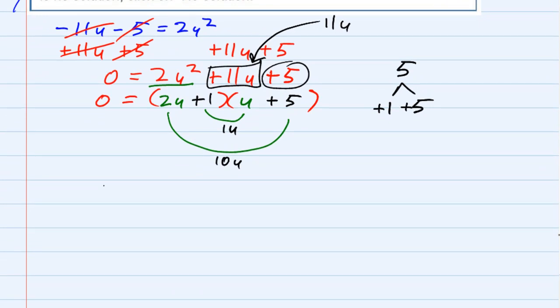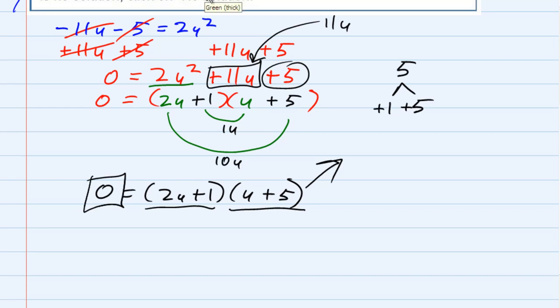And since it's factored, I know that 0 equals the factored terms 2u plus 1 times u plus 5. So, the 0 product rule says if you have two things being multiplied and the result is 0, one of those two things has to be 0. So let's take the first one, 2u plus 1, perhaps that one's equal to 0.